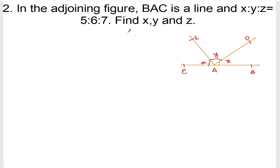Okay, now in the adjoining figure BAC is a line, and X:Y:Z = 5:6:7, find X, Y, and Z. Solution: Given that X is to Y is to Z is equal to 5 is to 6 is to 7.